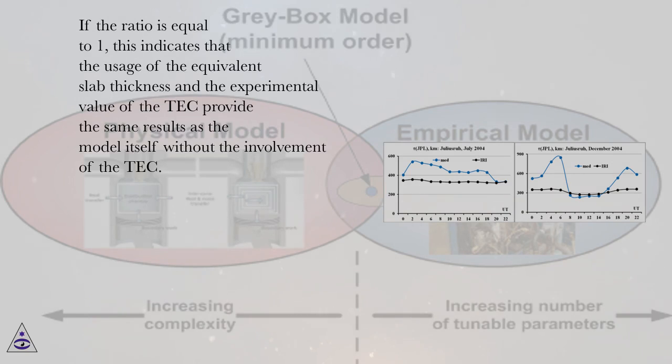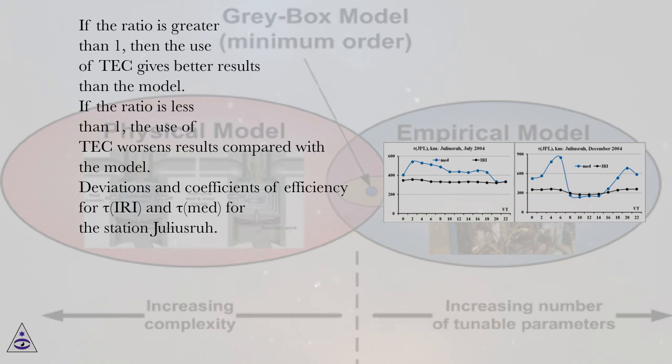If the ratio is equal to 1, this indicates that the usage of the equivalent slab thickness and the experimental value of the TEC provide the same results as the model itself without the involvement of the TEC. If the ratio is greater than 1, then the use of TEC gives better results than the model. If the ratio is less than 1, the use of TEC worsens results compared with the model.